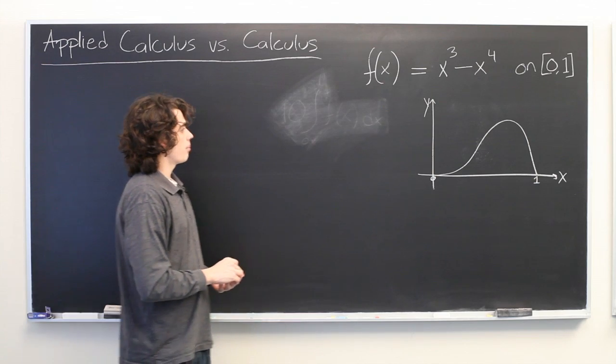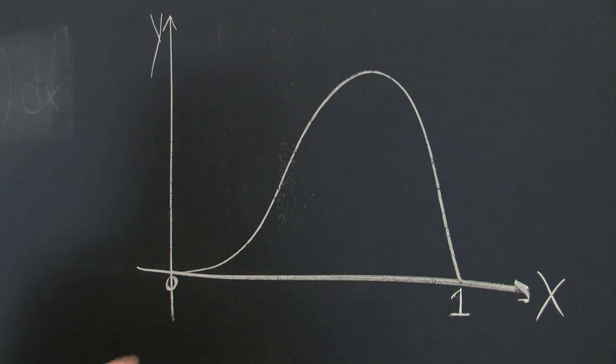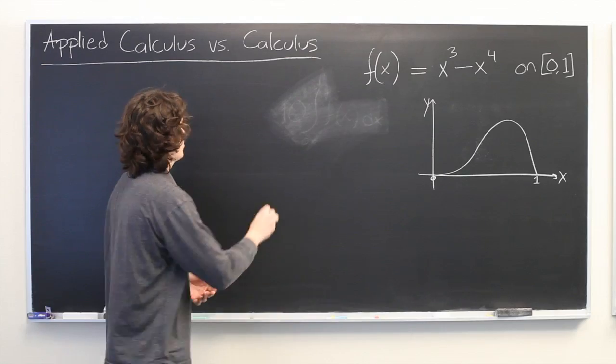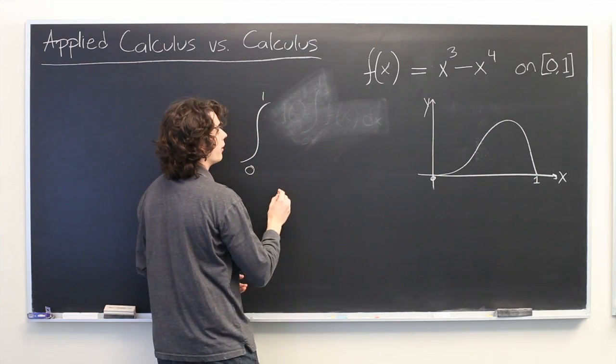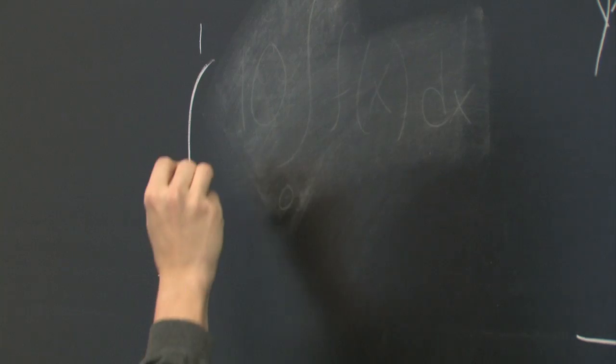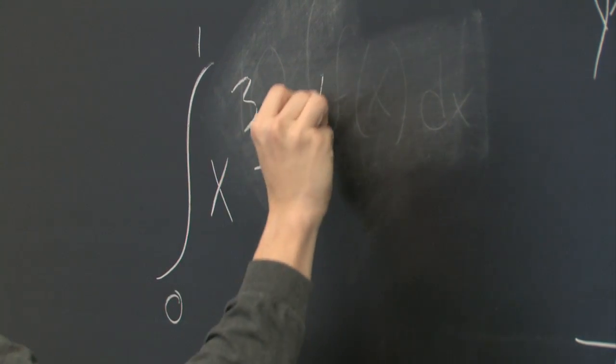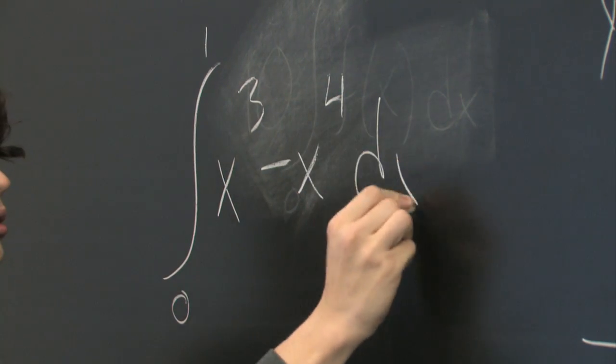Well, we start by finding what is the area underneath this curve. We can represent that with the integral from 0 to 1 of f(x). So we'll write x cubed minus x to the fourth dx.